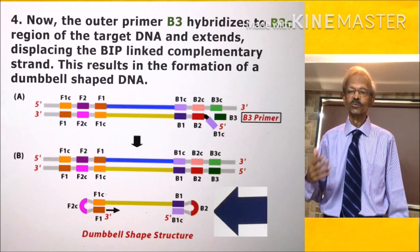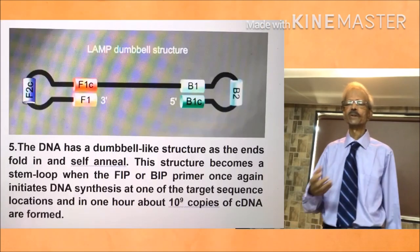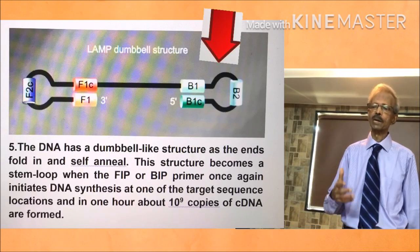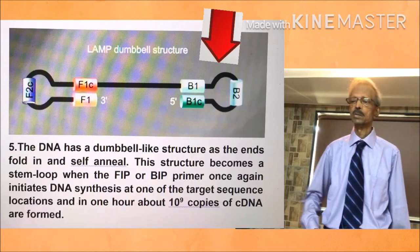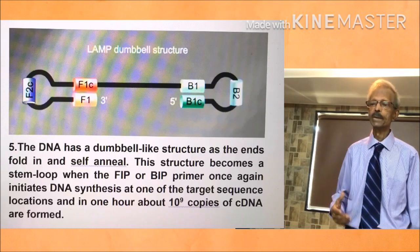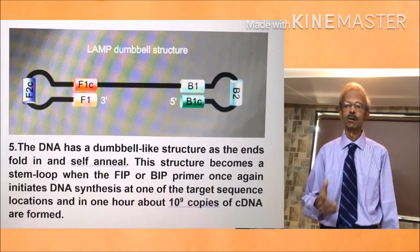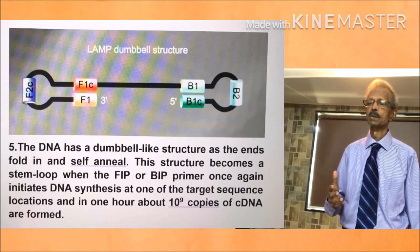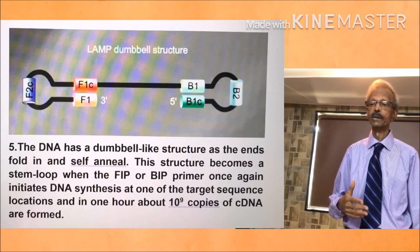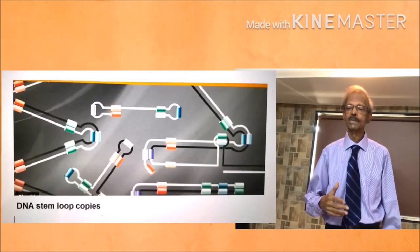Just look at the figure on the left-hand side. In step 5, the DNA has a dumbbell-like structure as the ends fold and self-anneal as shown in the figure. This structure becomes a stem-loop when the forward inner primers FIP or backward inner primers BIP once again initiate DNA synthesis at one of the target sequence locations. In one hour, about 10⁹ copies of cDNA are formed.